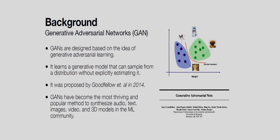GANs are designed based on the idea of generative adversarial learning. It learns a generative model that can sample from a distribution without explicitly estimating it. It was proposed in the year 2014 by Goodfellow. GAN is a very popular technique with applications in synthesis of audio, text, image, video, and 3D models in the machine learning community.